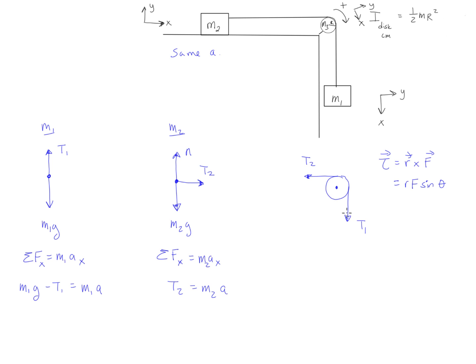We can see that T1 is providing a torque to try to get the pulley to spin clockwise, and from our coordinate system that was a positive torque. T2, however, is causing it to want to spin counterclockwise, so that would be a negative torque. Before, when our pulleys were ideal and massless, T1 and T2 had the same magnitude. But now, since our pulley has mass and the string is rotating the pulley, this can no longer be the case. For the pulley to start to rotate clockwise, there has to be a net torque, so the torque caused by T1 has to be greater than the torque caused by T2. So let's write our Newton's second law for rotation: the sum of the torques equals I times alpha.